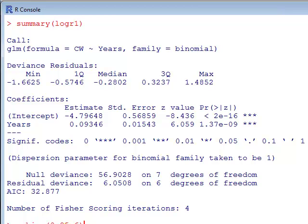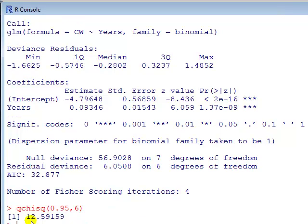Now the one-tailed test, we can, to look up the critical value, type qchisq open bracket 0.95. So this is going to be the area to the left of the critical point, and 6 degree of freedom. So critical value is 12.6. Since 6 is less than 12.6, we do not reject the null, that the model is adequate relative to the null model.